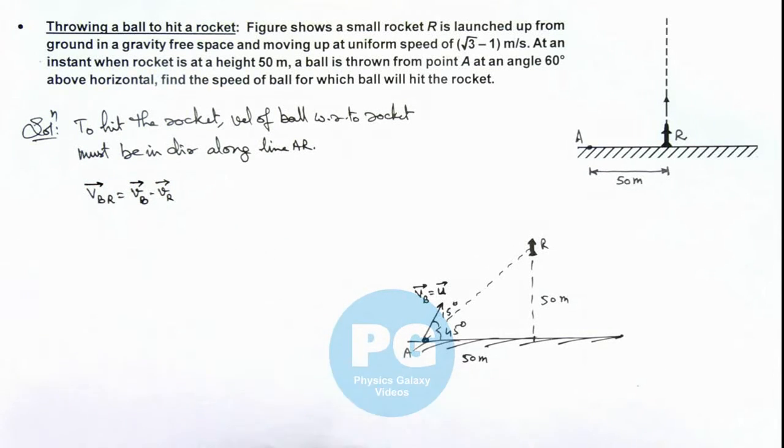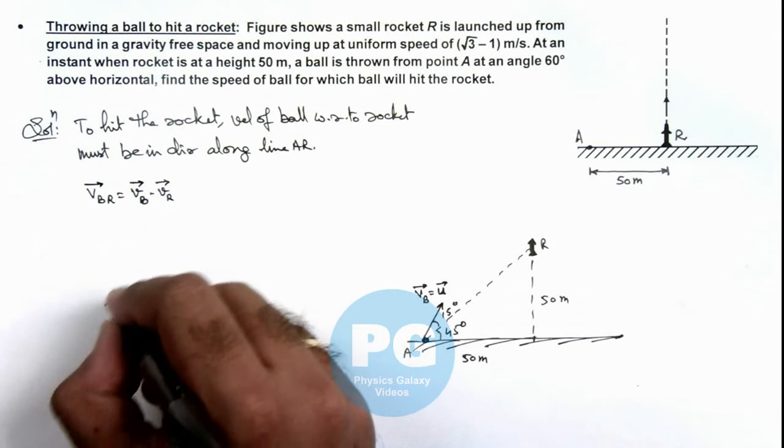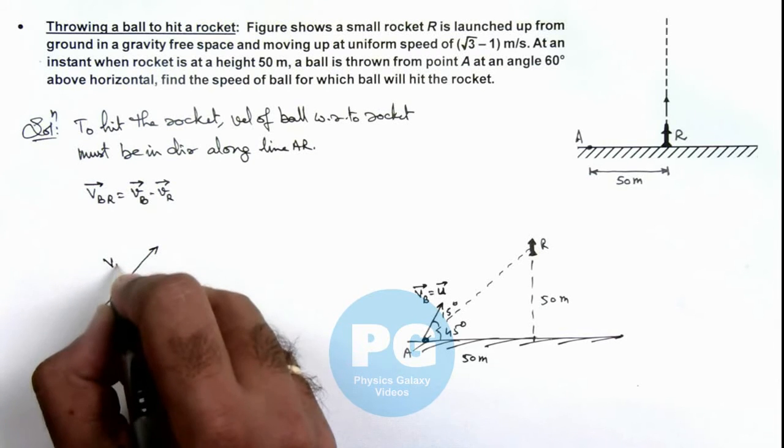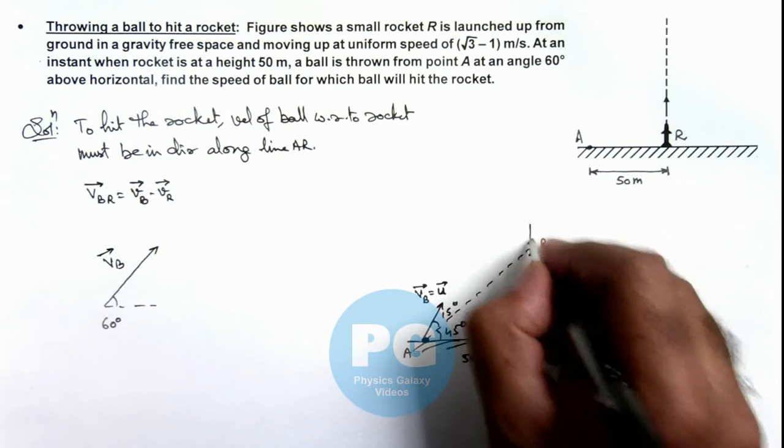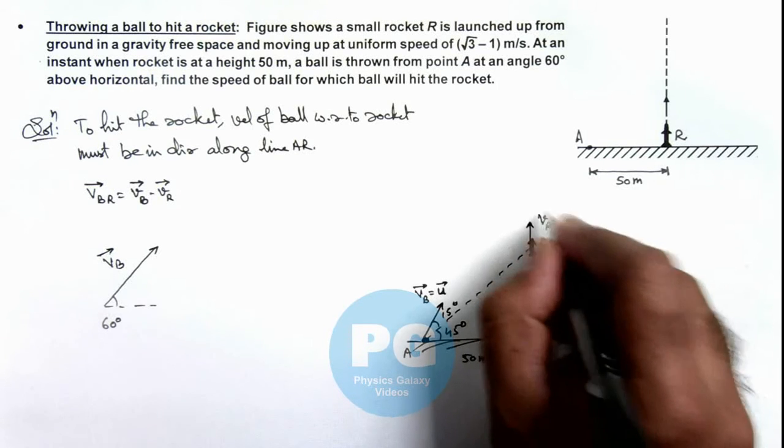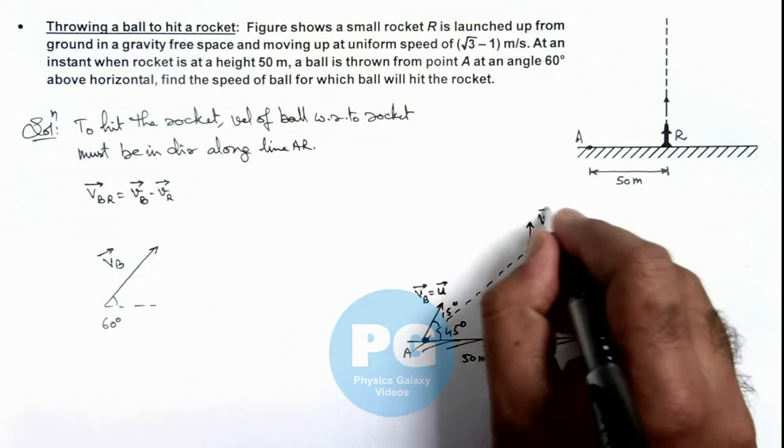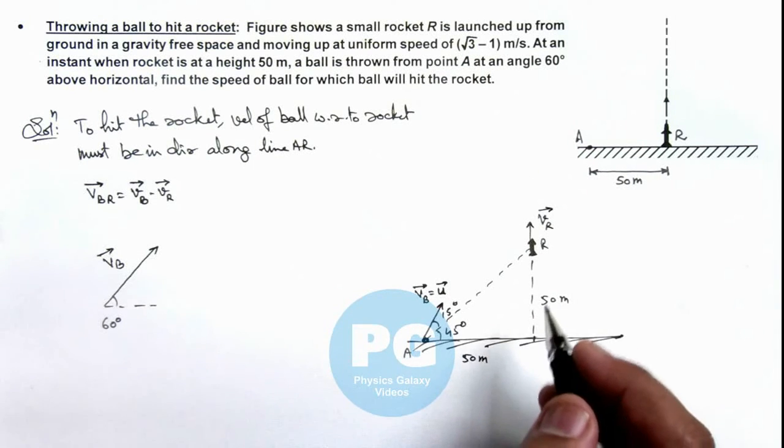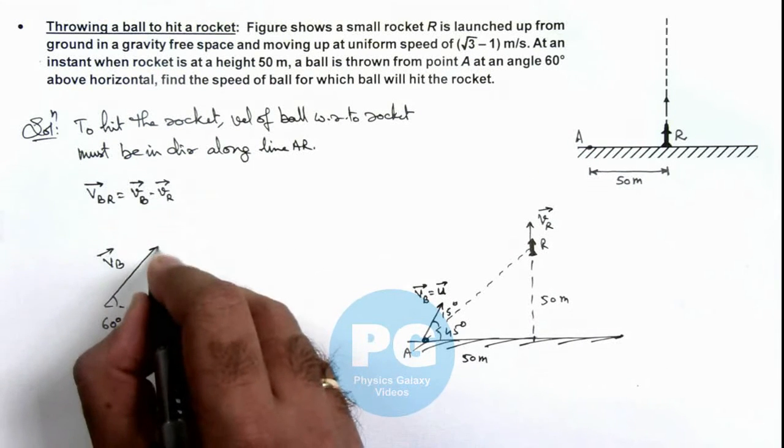Here if we draw vectorially, the velocity of ball is at an angle 60 degrees with the horizontal. The velocity of rocket is in the direction perpendicular to ground, that is vertical, and its numerical value we are given as √3 - 1. So minus v_r would be in this direction.